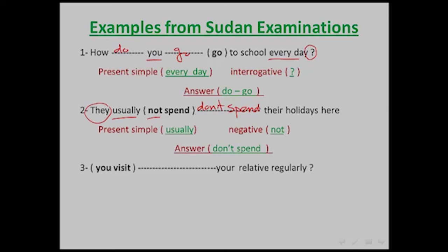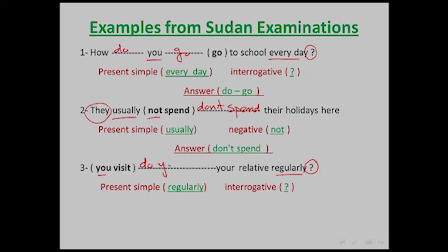Example three: 'You visit your relative regularly.' It is Present Simple because 'regularly' denotes repetition of action. It is interrogative because of the question mark. The subject is 'you', so we put 'do' before the subject. Answer: 'Do you visit your relative regularly?'